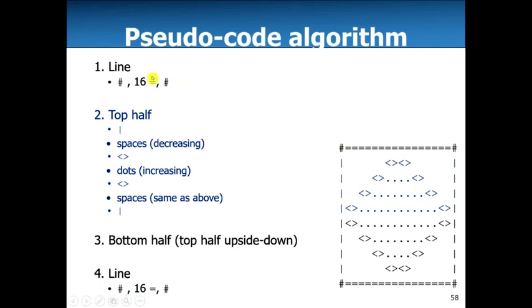So the first step, going back to the original problem, is we're going to draw this line here, which would be a pound and then 16 of these equals, another pound. Then we can imagine a problem being broken down into a top half and a bottom half. The top half consists of this pipe character, a bunch of spaces, the less than greater than, some number of dots which could optionally be zero, and then the less than greater than, spaces, and a pipe. Then you can do the bottom half reverse, and then finally this last one is the exact same as that one.